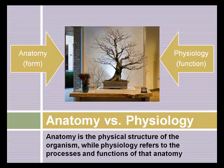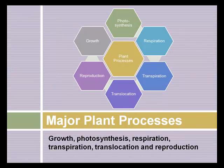Anatomy is the form of a plant, physiology is the function, and the two come together here in this view of a bonsai tree. Physical structure and the processes and functions — you need to have an understanding of both in order to really understand the science of plants. And here are some of those major processes going around this wheel.